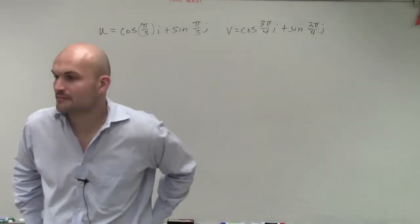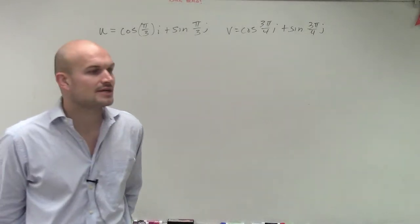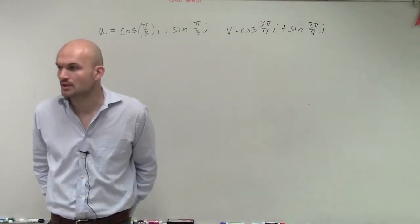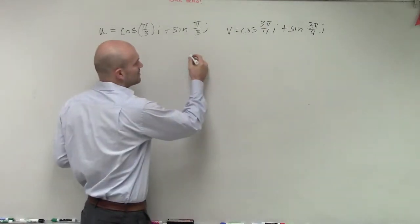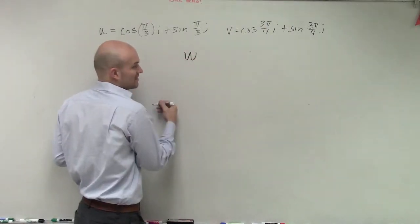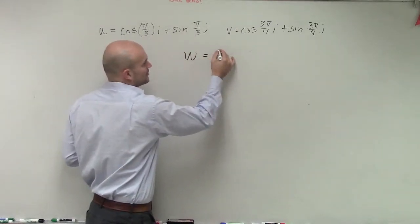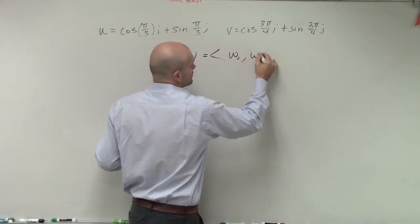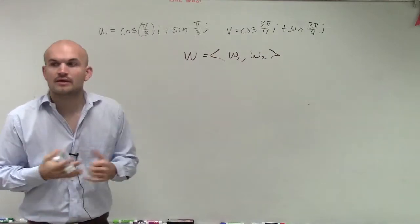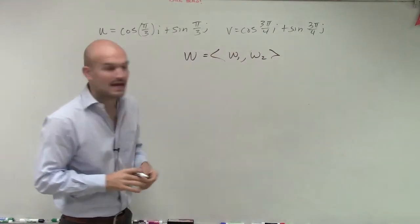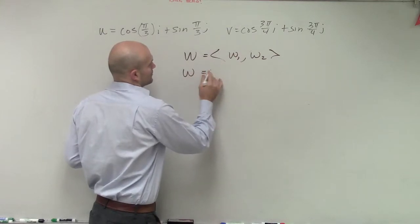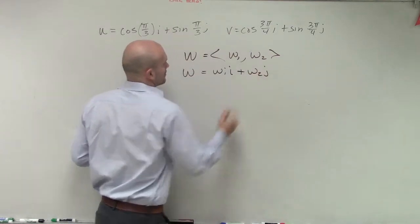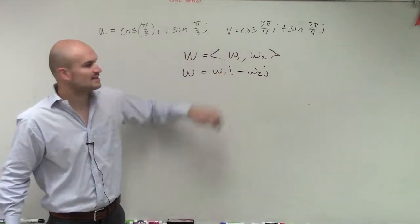So ladies and gentlemen, what we have up here is a linear combination of a vector. Let's go through a couple of different ways we've been able to describe our vectors. So the first way we learned a vector — let's use vector w since we have u and v here. We could represent that as a coordinate point, or as a coordinate vector component form of w1, w2. Then we can also write this as a linear combination, representing the exact same vector.